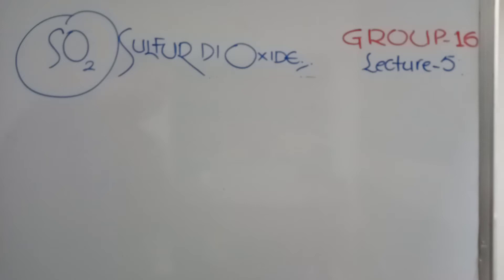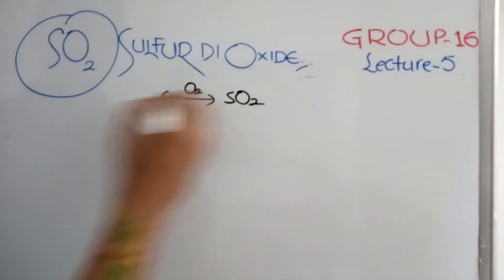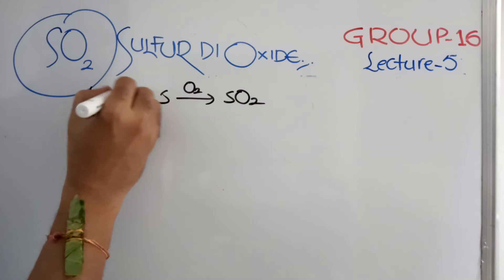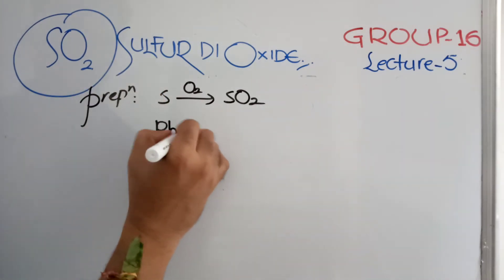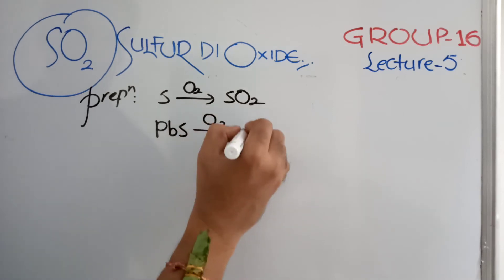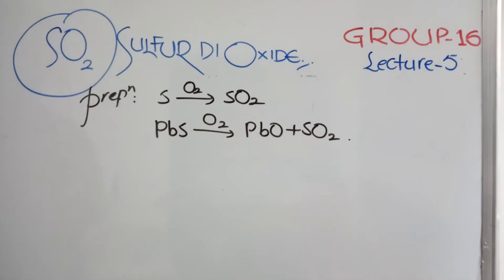The preparation is very simple. Sulfur when burnt in oxygen forms Sulfur Dioxide. Otherwise, you can take Lead Sulphite on burning use, Lead Oxide and Sulfur Dioxide. Once if you go to metallurgy, all Sulfide Ores, when they are roasted, you'll be getting their Sulfur Dioxide gas only.